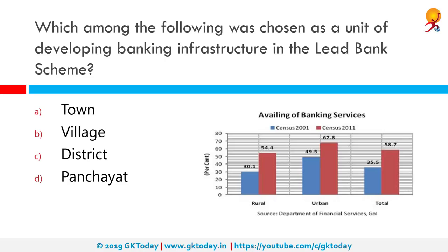Which was chosen as the unit of developing banking infrastructure in the Lead Bank Scheme? The correct answer is District. All districts in the country, except the metropolitan cities of Mumbai, Kolkata, Chennai, and Union Territories of Chandigarh, Delhi, and Goa, were allotted among public sector banks and a few private sector banks.